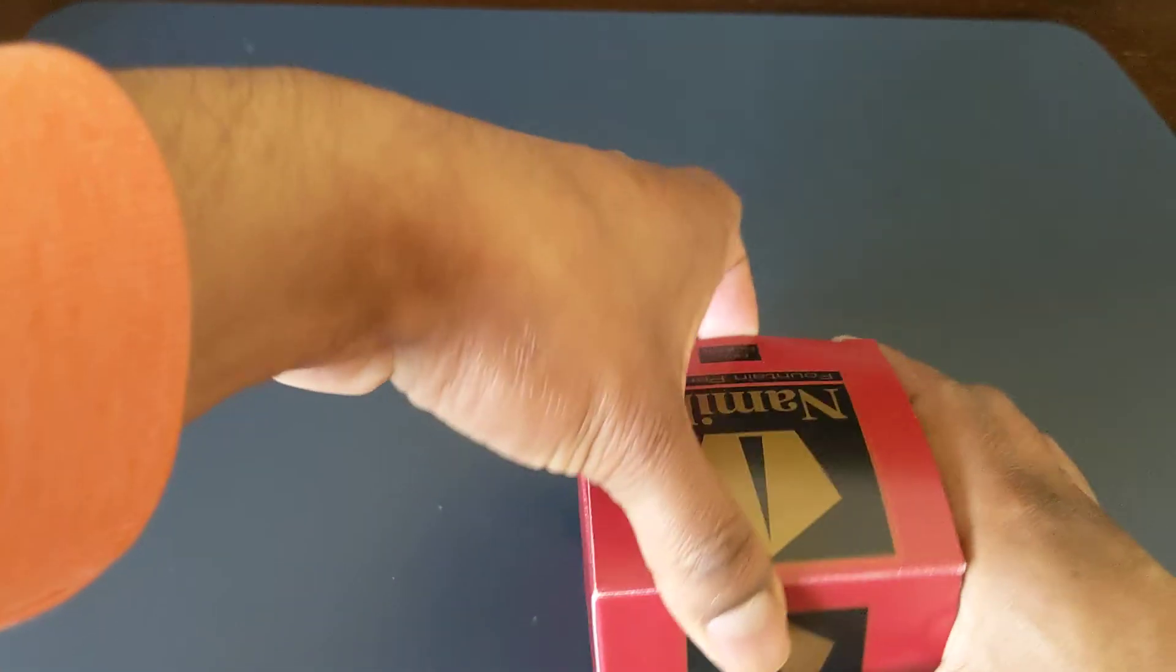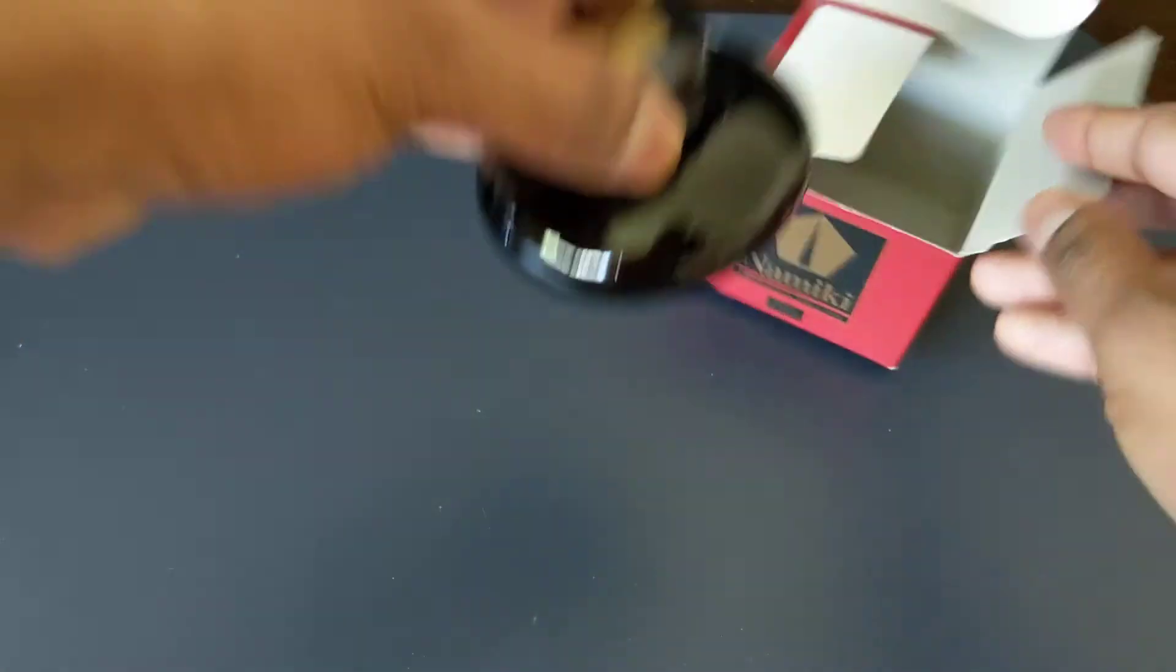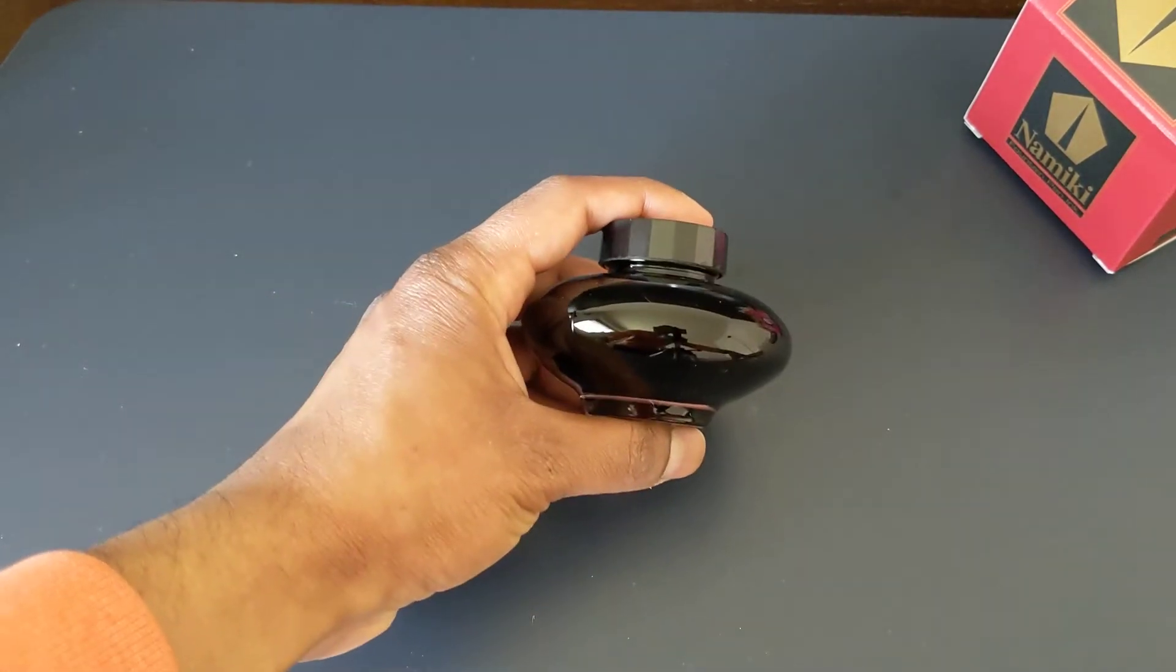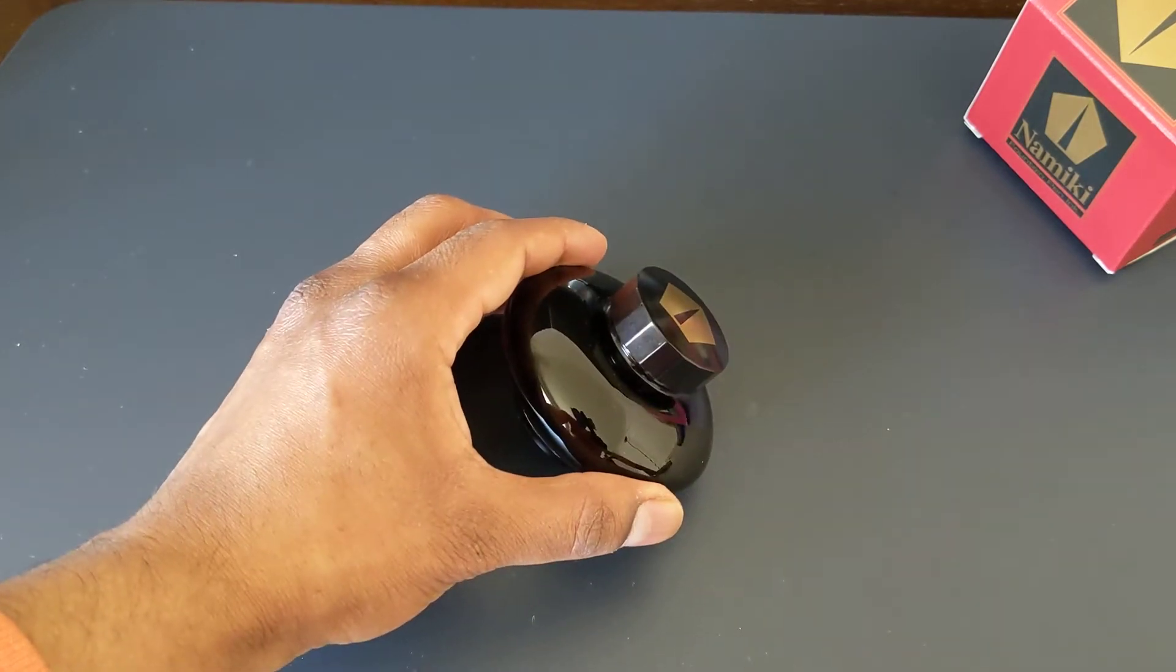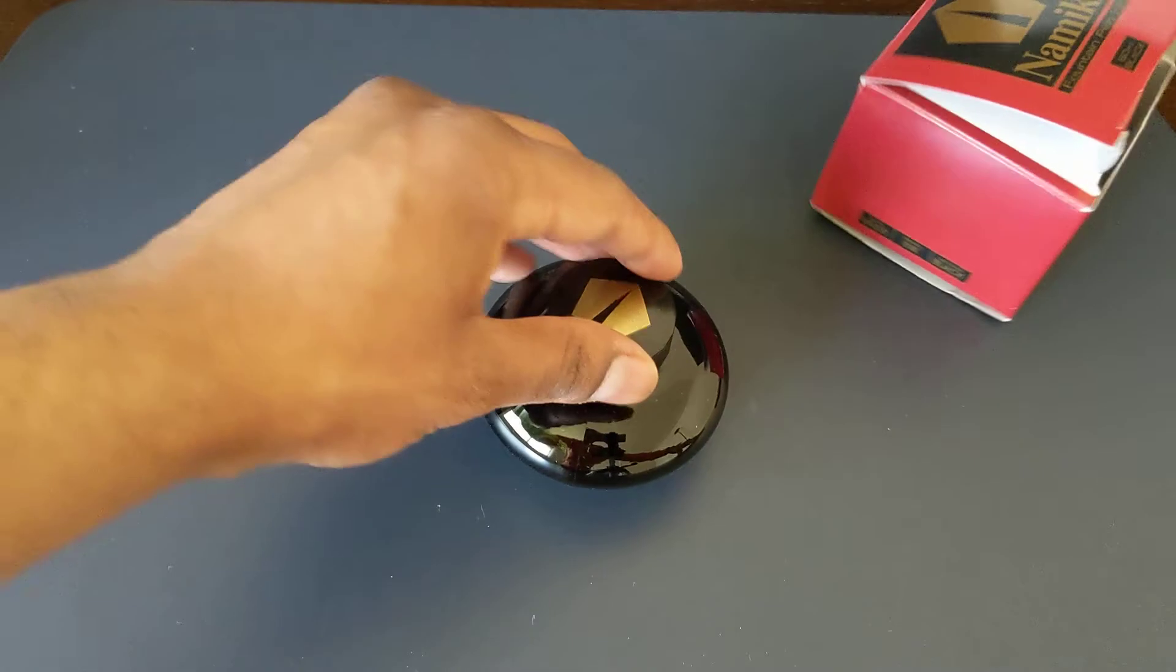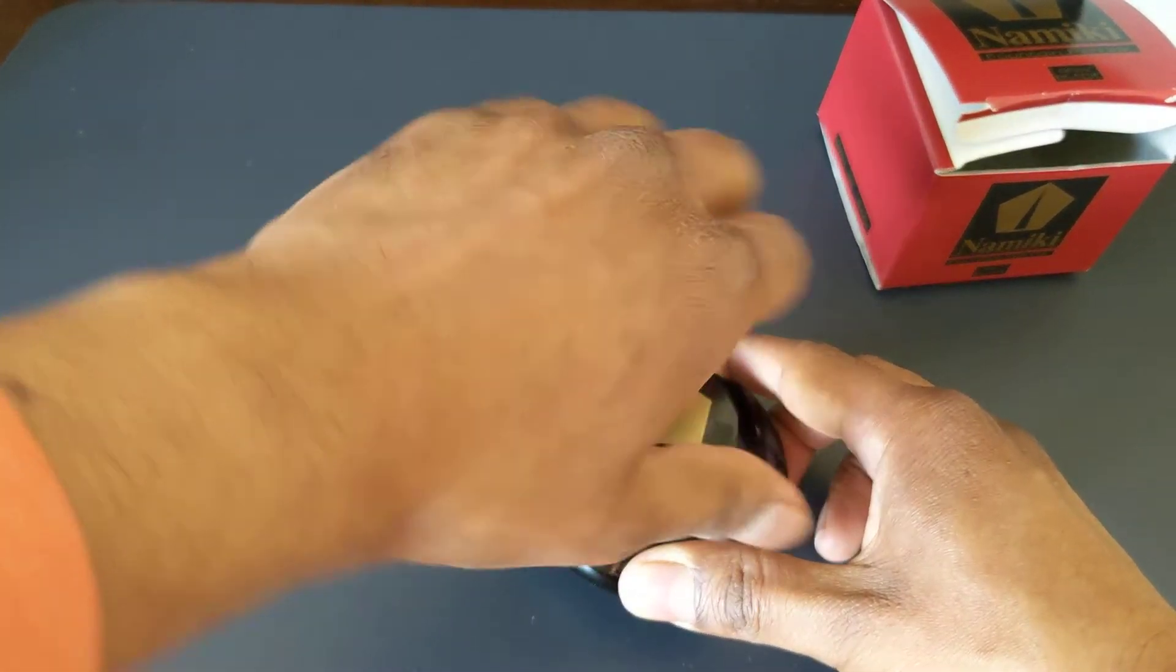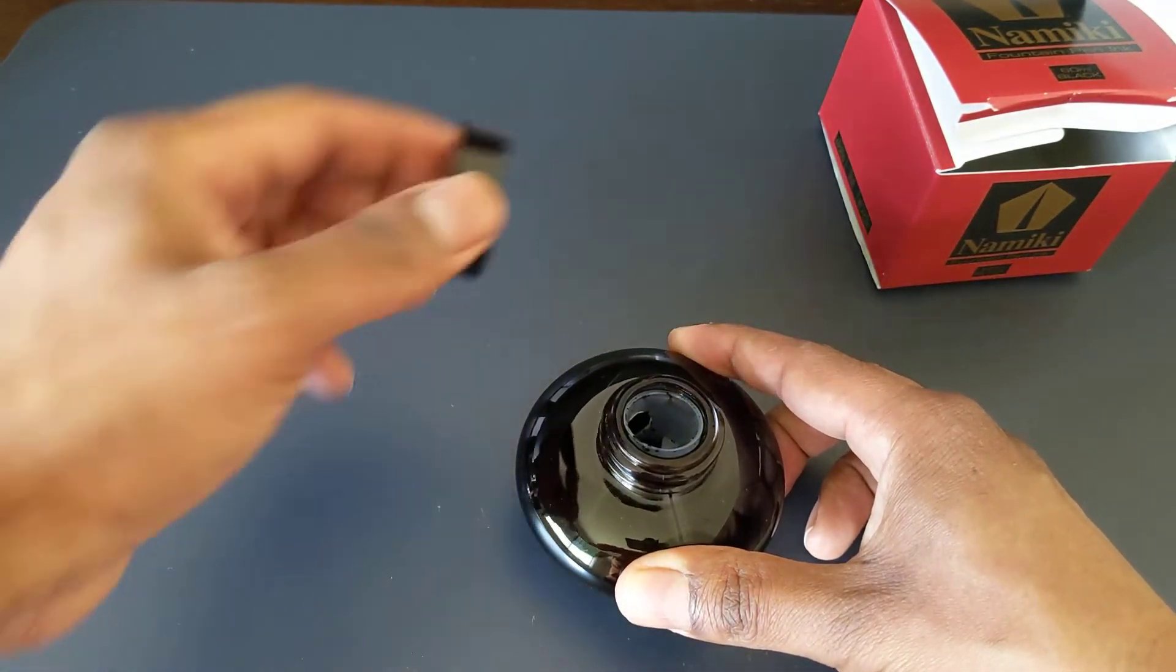Next, this is the 60 milliliter Namiki or Pilot standard ink bottle. This one sort of looks like a genie lamp in my opinion, but the reason it's shaped like this is because you can actually put the bottle sideways and then you can get a little bit more ink out that way, so that's functional. Also, this ink comes with a little plastic cone on the inside. You can see it there, it's the clear plastic on the inside.